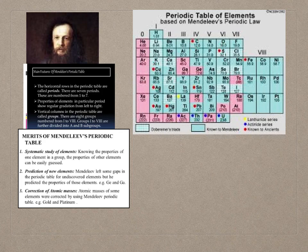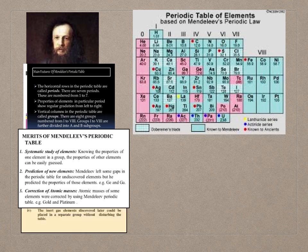Atomic masses of some elements were corrected using Mendeleev's periodic table, for example gold and platinum. Additionally, inert gas elements discovered later could be placed in a separate group without disturbing the existing table.